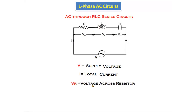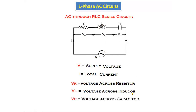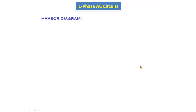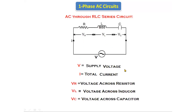VR is the voltage across the resistor. VL is the voltage across the inductor — note there is a spelling correction: 'inductor' should have a 't'. VC is the voltage across the capacitor. These are the parameters of the RLC series circuit.